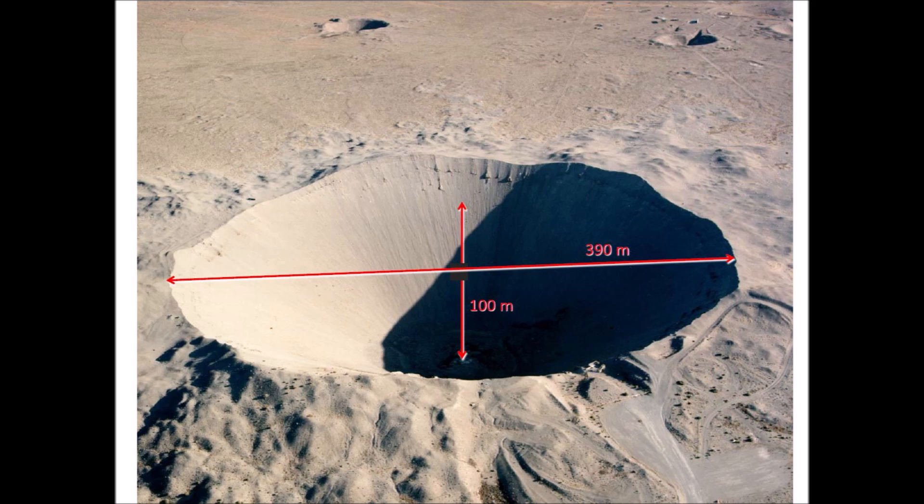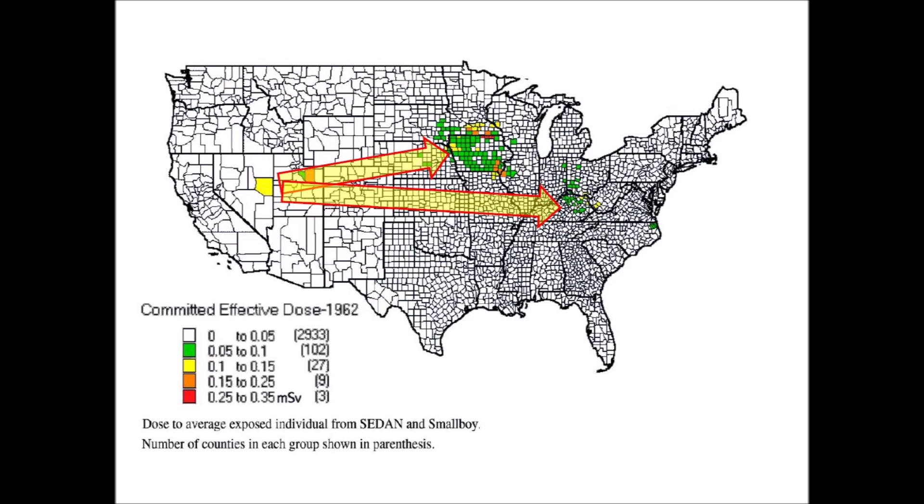Overall, 928 tests were conducted in Nevada with 1,021 detonations because some tests involved more than one device. The radioactive cloud from the Sedan explosion separated into two plumes, rising to 3.0 kilometers and 4.9 kilometers — that is 10,000 feet and 16,000 feet — heading northeast and east toward the Atlantic Ocean. High levels of radioactivity were detected in Iowa, Nebraska, South Dakota, and Illinois.